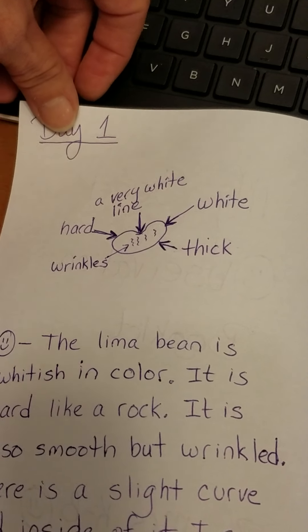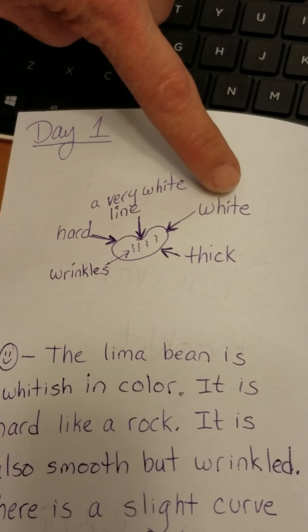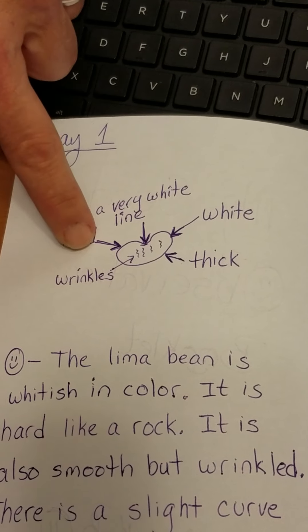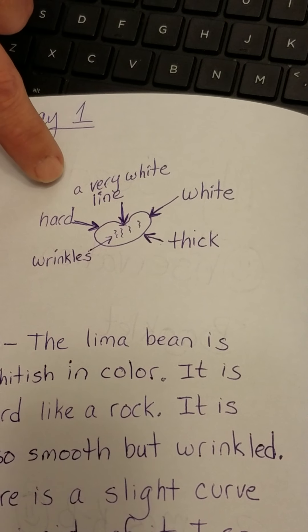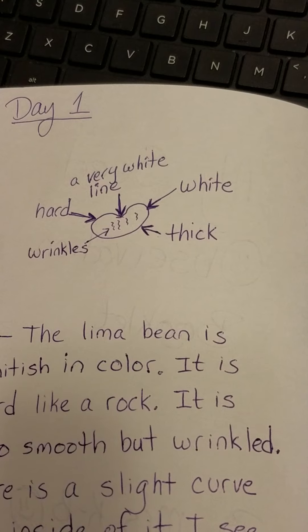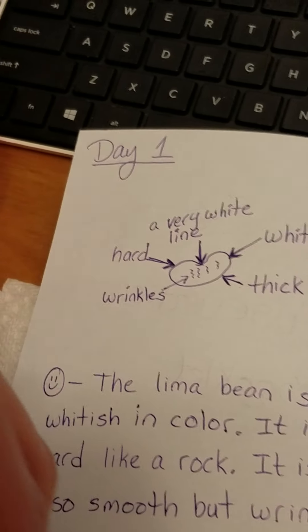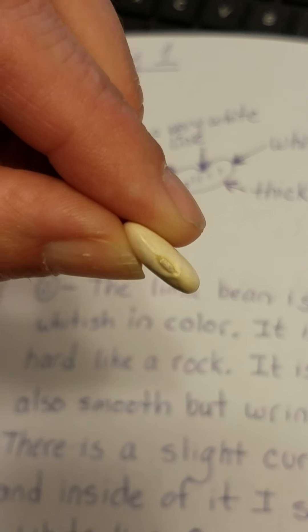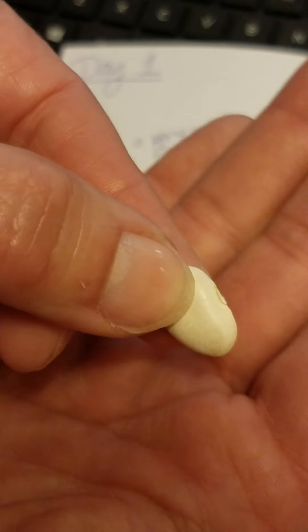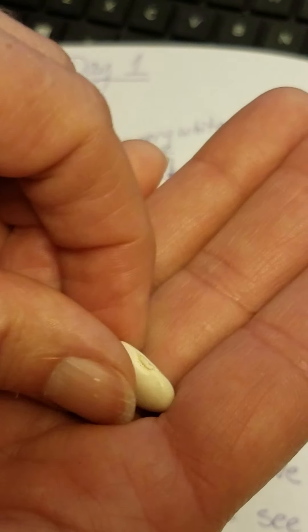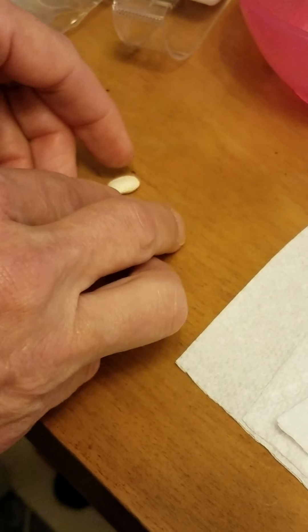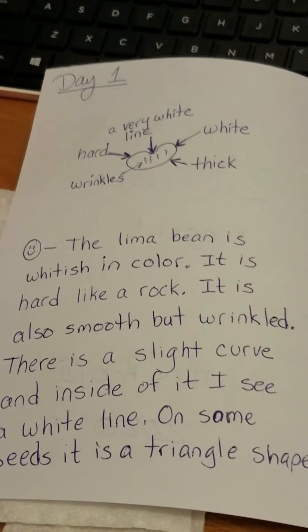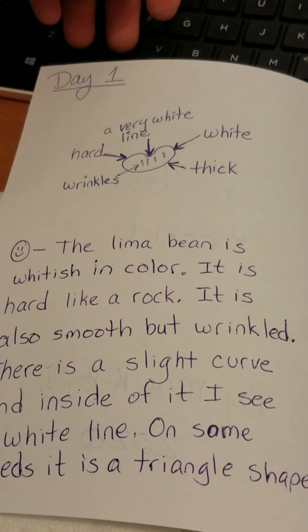In my booklet I have the bean labeled: I labeled the color, the thickness, and made a description that it has wrinkles. I drew that in, noted that it was hard, and I also marked something very unusual — I discovered there is a white line, and on some of the beans there's actually a triangle. Kind of like an outie belly button. And you can hear that it's hard — it is definitely hard. So I drew my observation and we're going to keep track of this one particular bean every day to see how it changes.